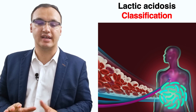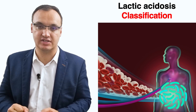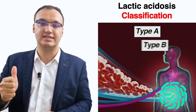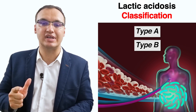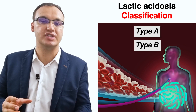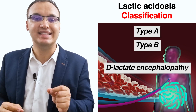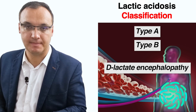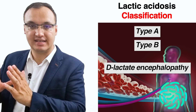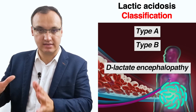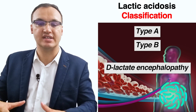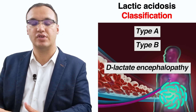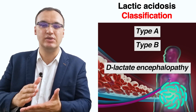It is worth knowing that there are two main types of lactic acidosis: type A and type B. There is also an unusual form known as D-lactic acidosis, or D-lactate encephalopathy. We will now discuss type A and its causes before talking about the others and the diagnosis of lactic acidosis.